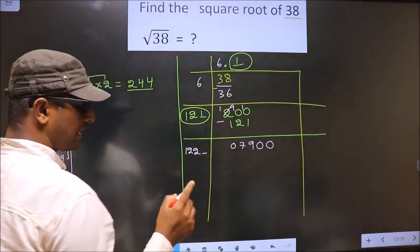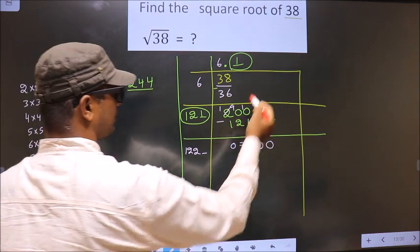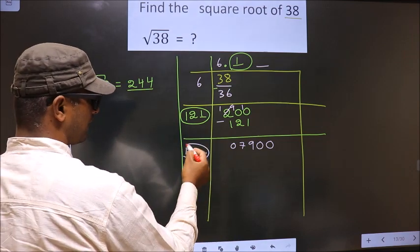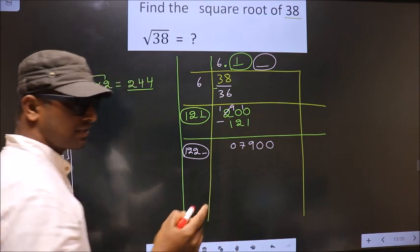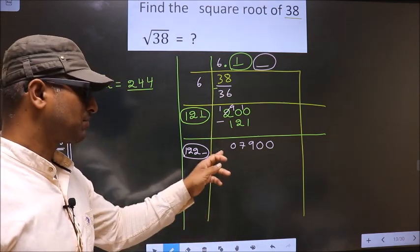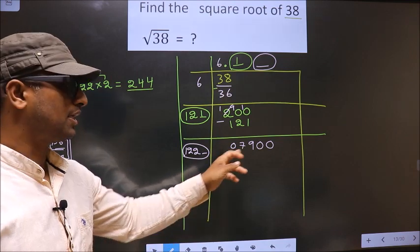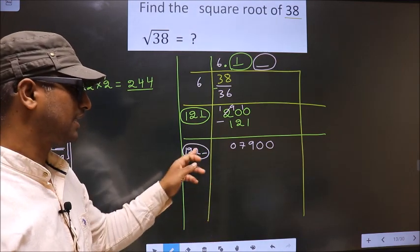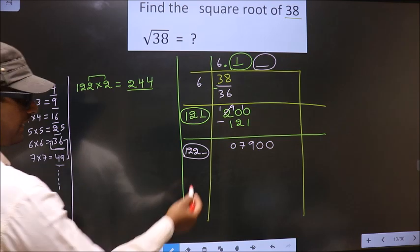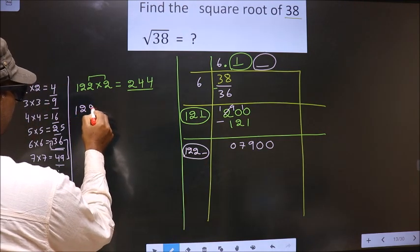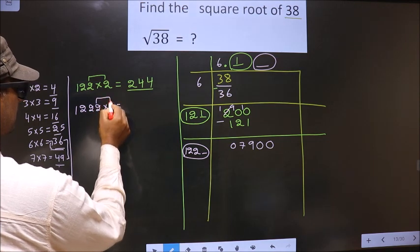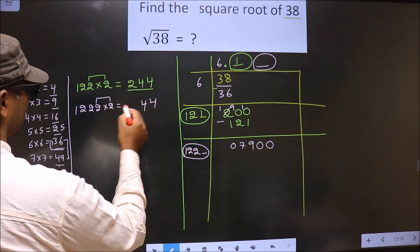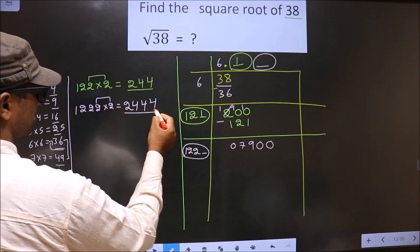Now I should write a number here. The condition is: whatever number I write here, I should also write the same number in the divisor, and when you multiply these two numbers, the result should be either equal to or smaller than the dividend, but should not be larger. If I take 2, then 1222×2=2444, which is far from 7900.